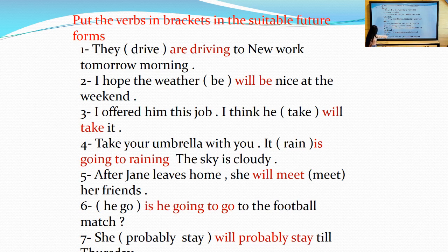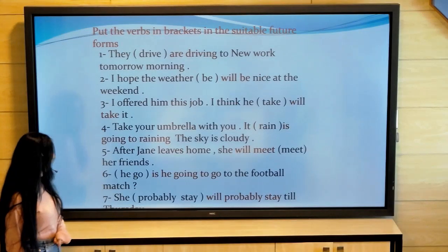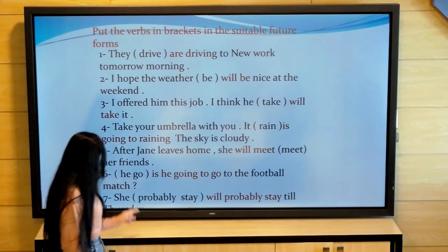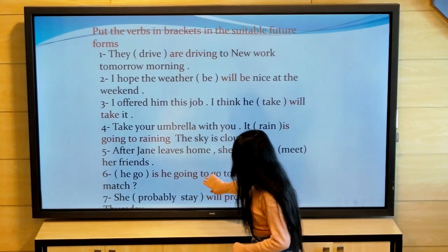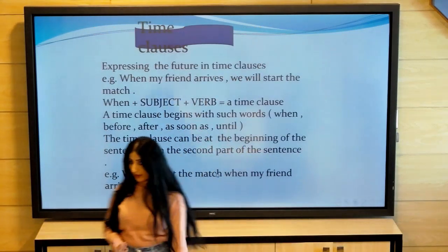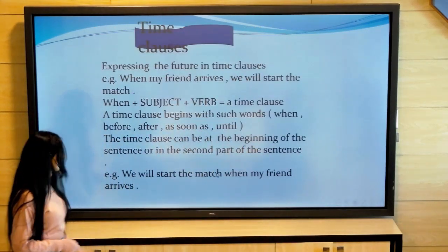Six one: it's a question. He go to the football match. I'm planning or I have time or I'm planning to do something in the future. So I will use is he going to go to the football match. The final one: she will probably stay. Because we have probably, I'm not sure, so I will use will.